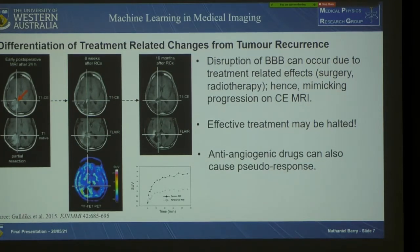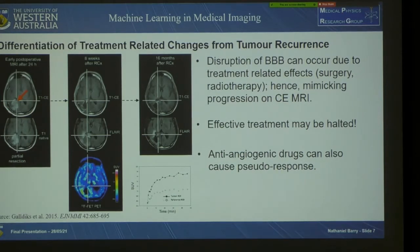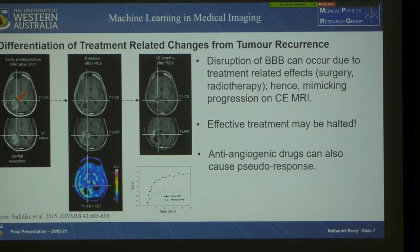An example of pseudoprogression: an early post-operative MRI shows residual contrast enhancement. After radio-chemotherapy, at the eight-week mark that residual contrast enhancement has remained, so it looks like recurrence — but on FET PET in the same location there's no increased uptake at all. Further down the line at 16 months that residual enhancement has gone away by itself, confirming pseudoprogression. In an even more complex situation, a patient who has recurrence can be given anti-angiogenic drugs, causing a pseudo-response to treatment that we also have to differentiate.